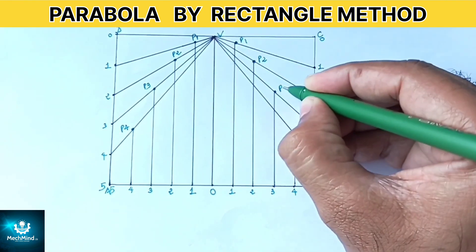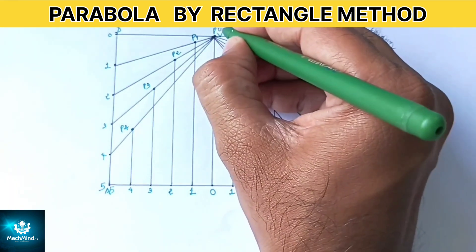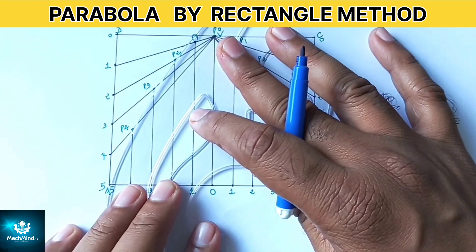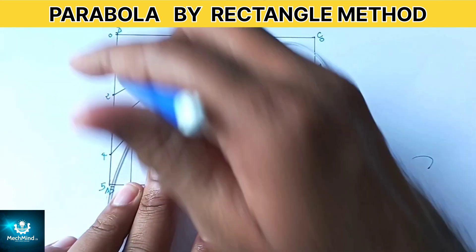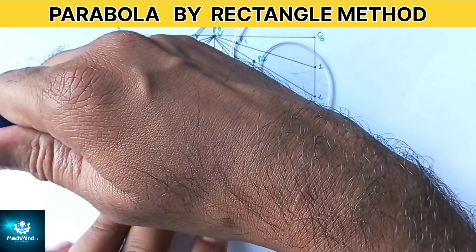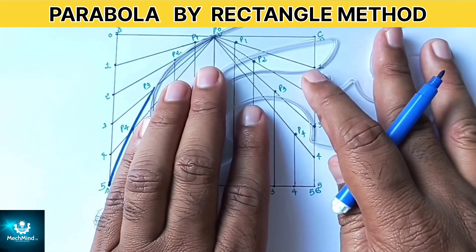After locating all these intersection points, join them smoothly with a freehand curve or French curve. This curve is the required parabola obtained by the rectangle method.